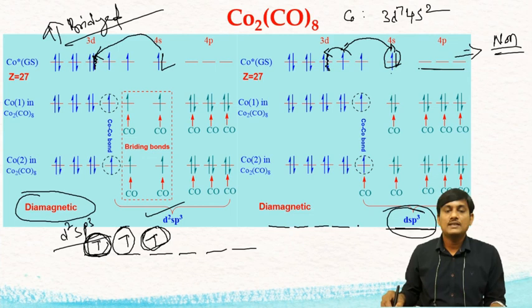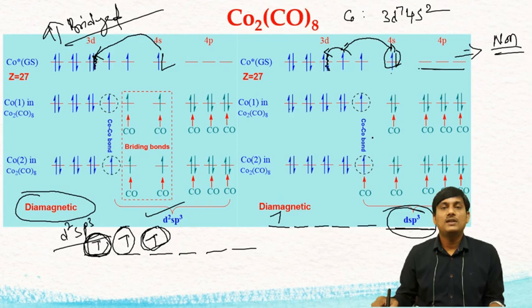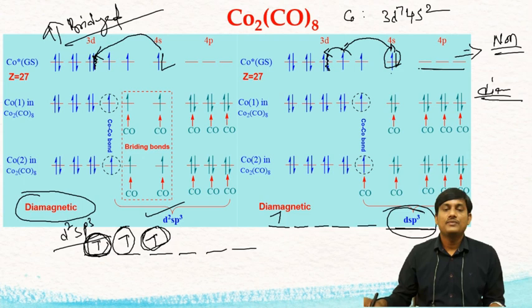This dsp³ hybridization gives 5 hybridized orbitals. One has an unpaired electron and the remaining 4 are empty. These 4 empty orbitals are filled by 4 terminal CO ligands, and the unpaired electron is paired by the cobalt-cobalt metal bond. Since all electrons are paired, this structure is also diamagnetic.